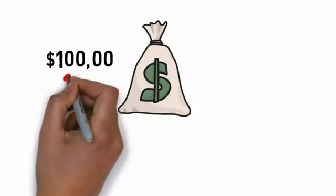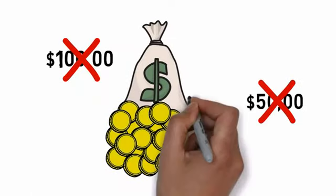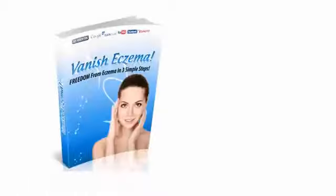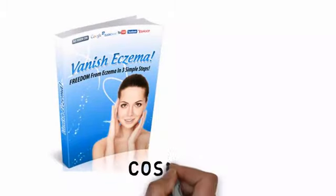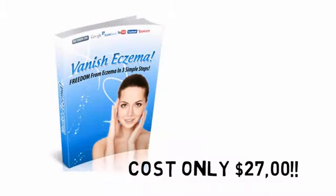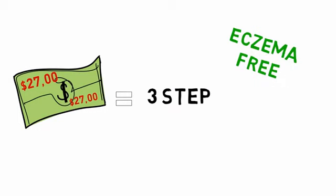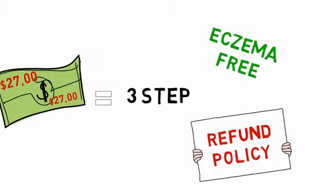So you won't pay $100, you won't pay $50, you won't even pay $39. If you order now, you can get instant access to the Vanish Eczema e-book for the absurdly low price of only $27. That's right, only $27 for access to the most valuable, detailed, and easily actionable three-step system that's absolutely guaranteed to permanently cure your eczema or you get a full refund of your money.